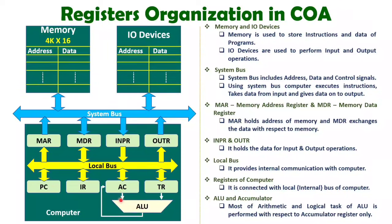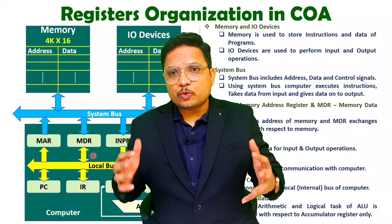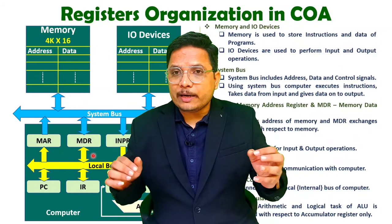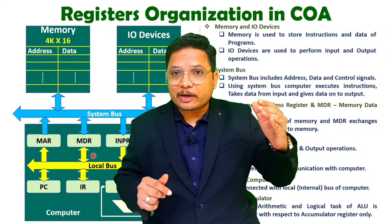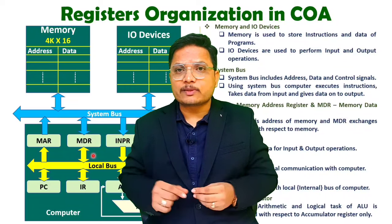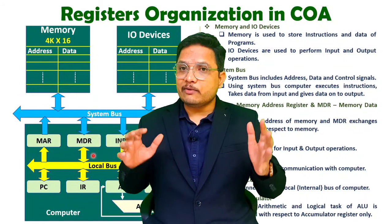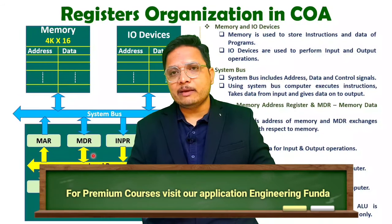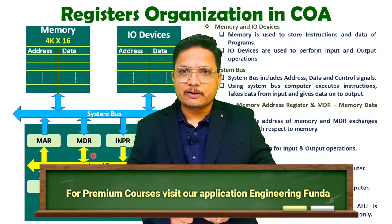That is how a single instruction is executed. One operand is in the accumulator and the second operand comes into TR, either from memory or from a general-purpose register. Based on the opcode, the ALU performs the arithmetic or logical task. With respect to the clock, instructions come one by one into the CPU and are executed step by step. That is how the computer operates with respect to memory to execute programs. I hope it is clear — please note any questions in the comment box. Thank you so much for watching.